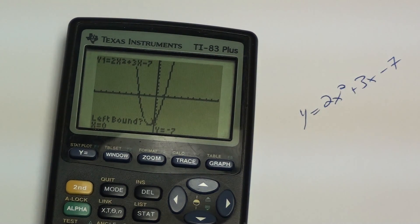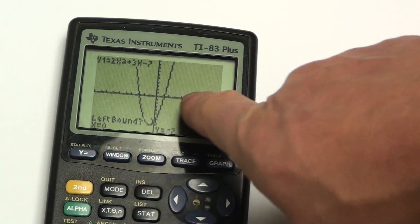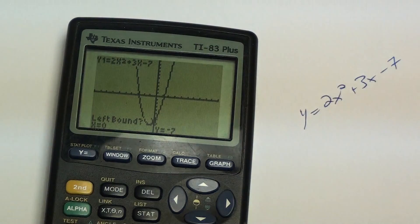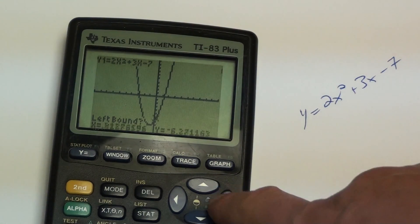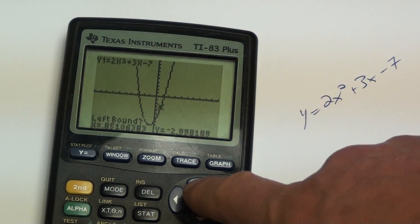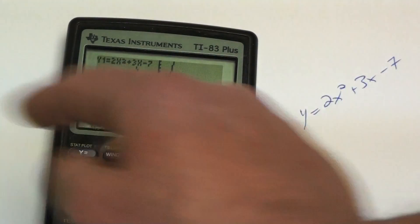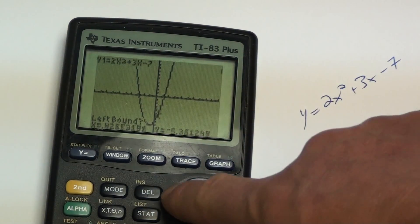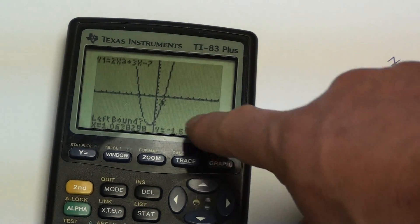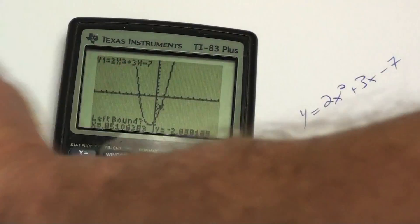The first question the graphic calculator asks you is left bound. So I need to choose an x-intercept. I have actually two of them. I have one x-intercept here and another one over there. So I want to choose one of these x-intercepts. Maybe I'll choose this one on this side. So I need to scroll to just one side of that x-intercept, the left-hand side of the x-intercept. So I didn't actually have to scroll that far. Scroll to the little star is right just to the left of the x-intercept. And then you hit the enter button.